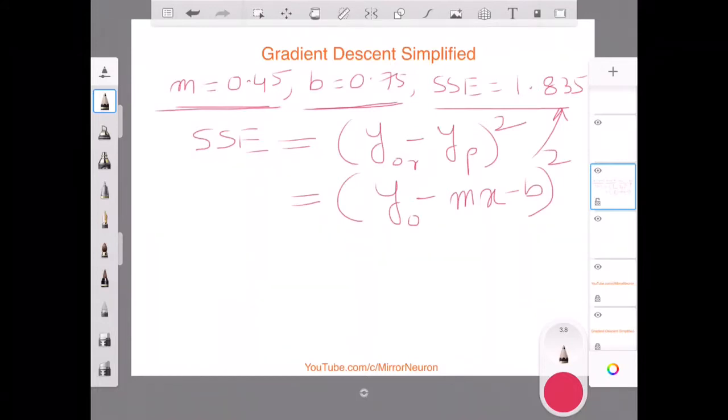So what I want to see is the derivative of sum of squared error. That means, what is the change in the output if I change m? Similarly, I would also like to see what is the change in my output, which is the error function, if I change b.